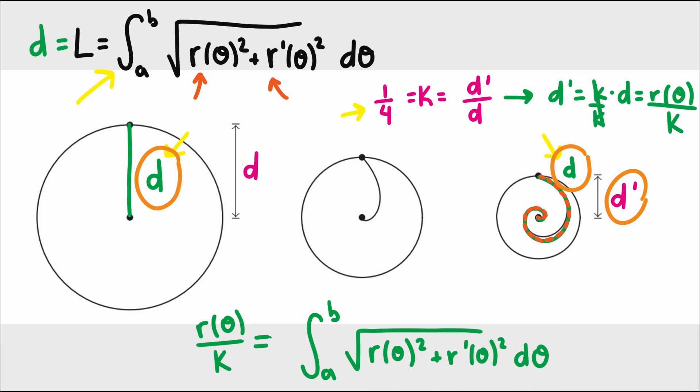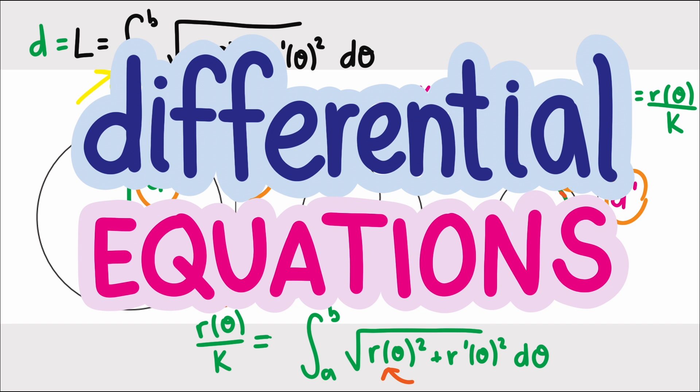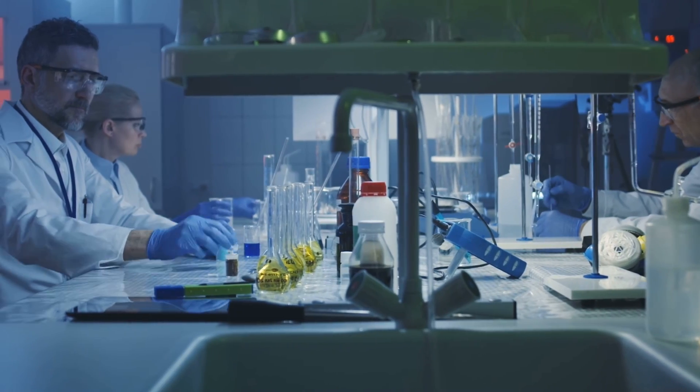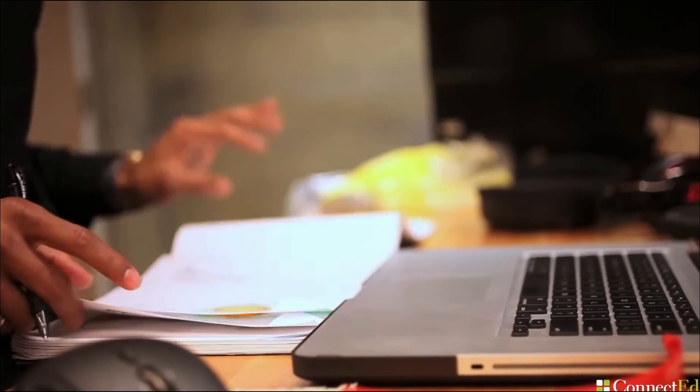Second, we're trying to solve for a function. We want to know what r of theta is, and usually we're solving equations for an unknown value, but here it's an unknown function. Equations with unknown functions and derivatives of that function are called differential equations, and differential equations are so valuable at solving real-world problems that they are the basis of the field of applied mathematics.